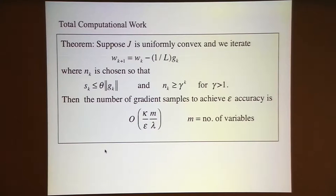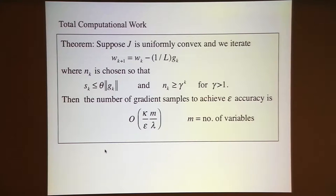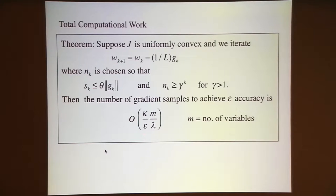The total number of gradient samples means the total amount of work—the total time that I touch the objective function. In a gradient algorithm, the iteration itself is very cheap; what's expensive is the function evaluation. The number of gradient samples to achieve epsilon depends on the condition number of the problem (normal since we're using steepest descent, which gets worse with condition number), M the number of variables (linear dependence), lambda the smallest eigenvalue, and has a 1 over epsilon dependence.